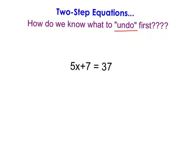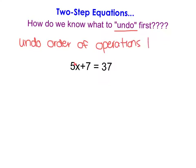When we have two-step equations, there are two operations — here we can see there's addition and multiplication — and the trickiest part is figuring out what we undo first. The easiest way to think about this is we are going to undo the order of operations in reverse or backwards, because that's the best way to get the variable by itself.